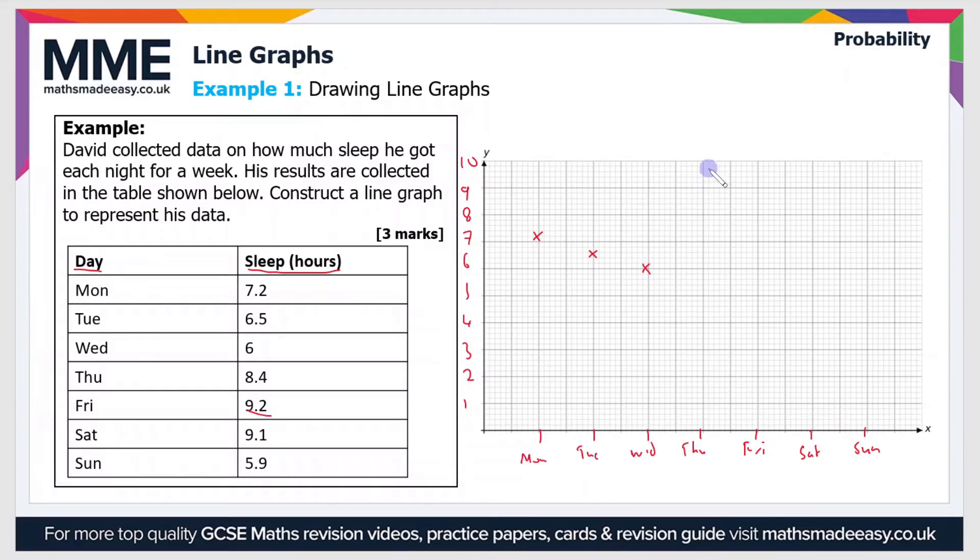Thursday is 8.4 hours of sleep, so that's that point up there. And then Friday was the most sleep during the week, so that's 9.2 up there. Saturday, quite close to that, 9.1, that's there.